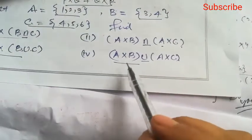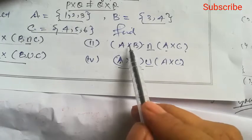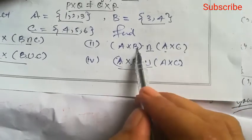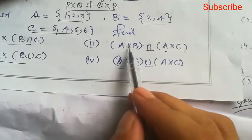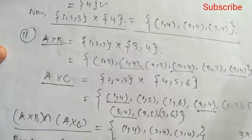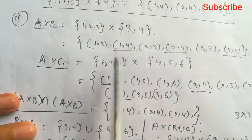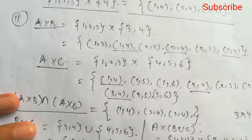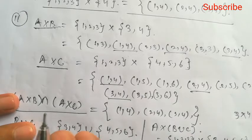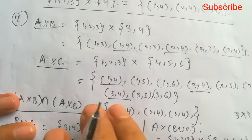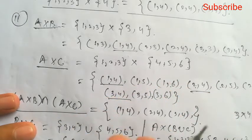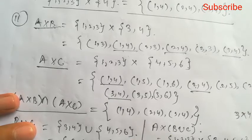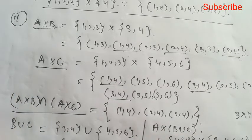The last part (iv) (A cross B) union (A cross C) is similar — we already found A cross B and A cross C. Just find their union: all elements will come, but common elements only once. Union means all elements of both sets; intersection means only common elements. Do this fourth part yourself.